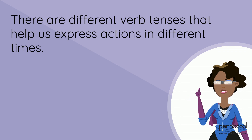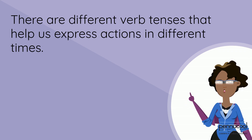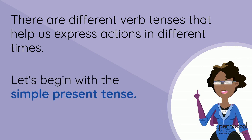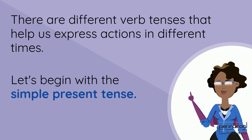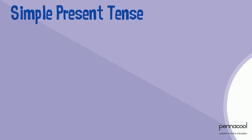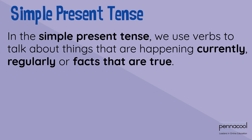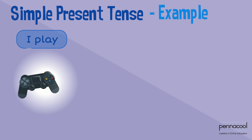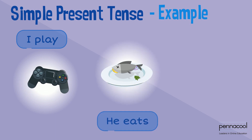There are different verb tenses that help us express actions in different times. Let's begin with the simple present tense. In the simple present tense, we use verbs to talk about things that are happening currently, regularly, or facts that are true. For example: I play, he eats, and we study.